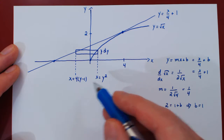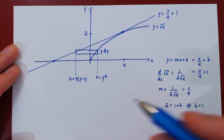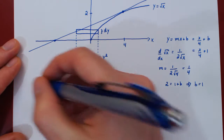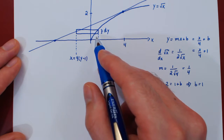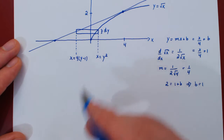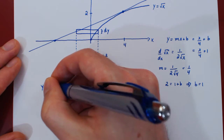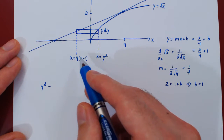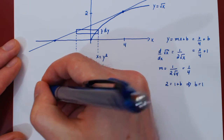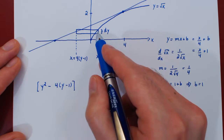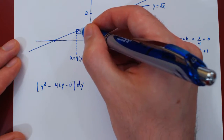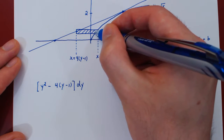Now we have the larger x-value and the smaller x-value in terms of y, so we can find the area of the rectangle. The area equals the height times the width: the length of the segment is y squared minus 4 times (y minus 1), multiplied by the width dy.